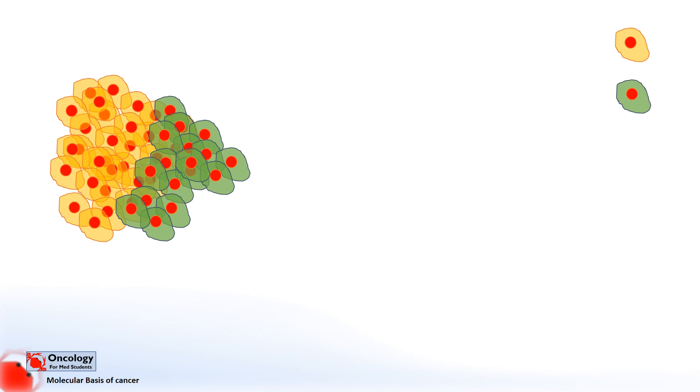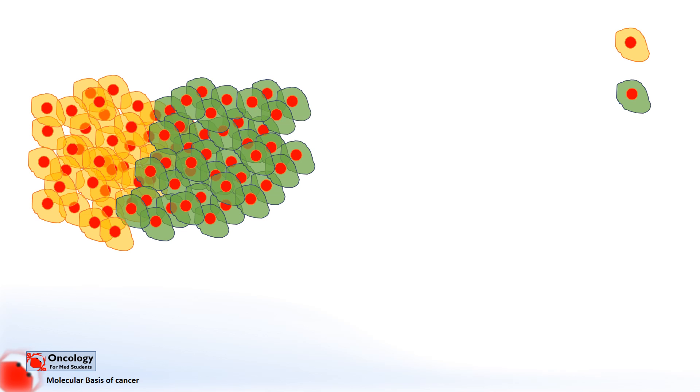Mutations are random but because every cell is competing with each other for space and resources, those that gain mutations that enable them to divide faster, like this green cell here, gives them an advantage. You might have noticed that this is very similar to the theory of natural selection.